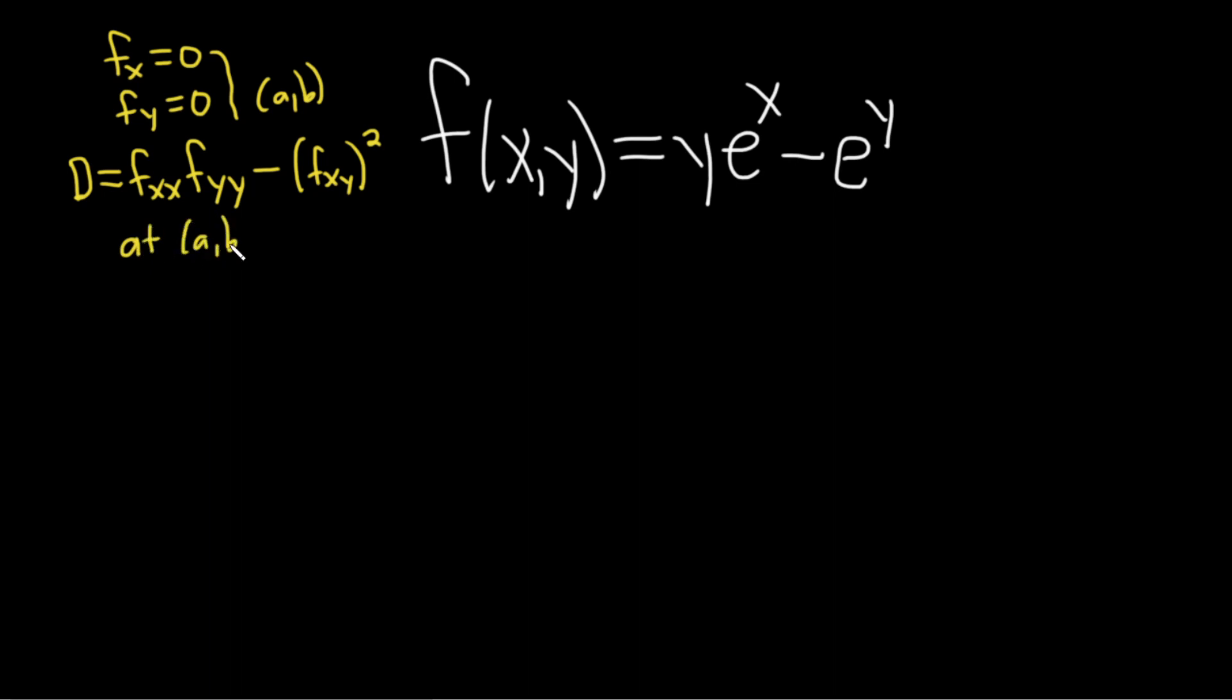At (a,b) you have a couple different cases. If big D is positive and the second derivative with respect to x is also positive, then in this case you have a min. It's really easy to memorize if you think backwards: positive, min. Likewise, if big D is positive and the second partial with respect to x is negative, in this case you have a max, negative max.